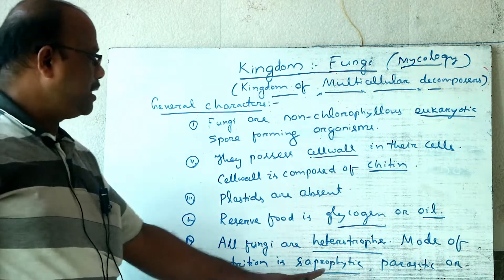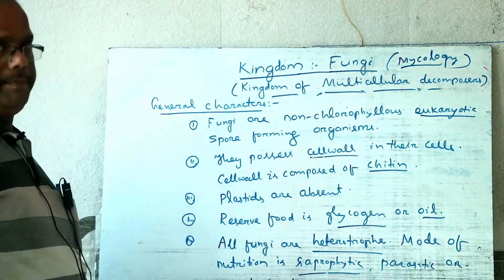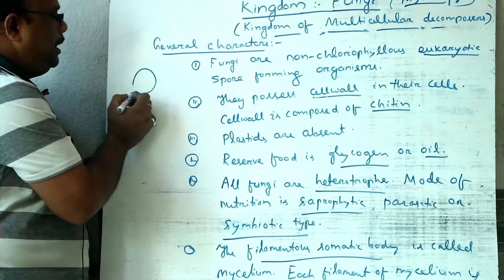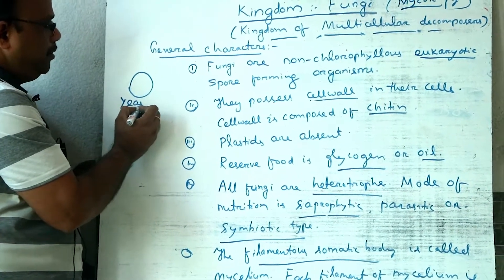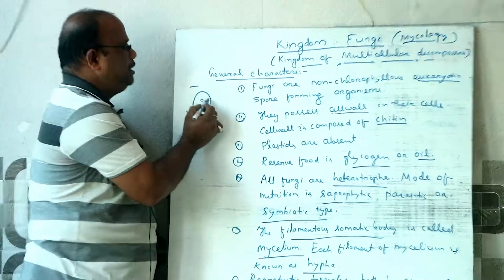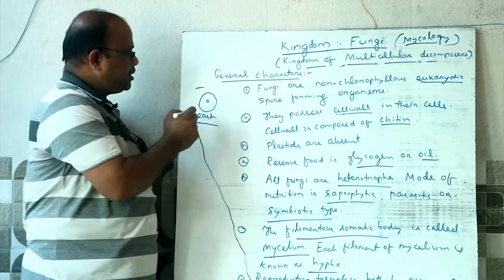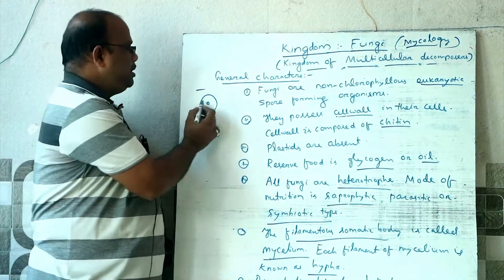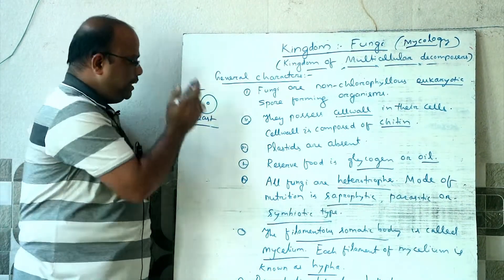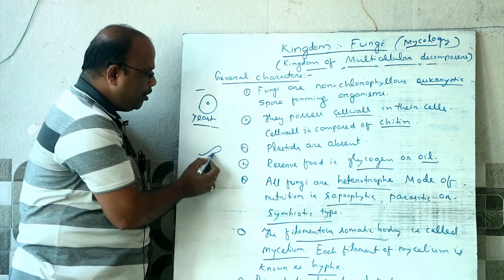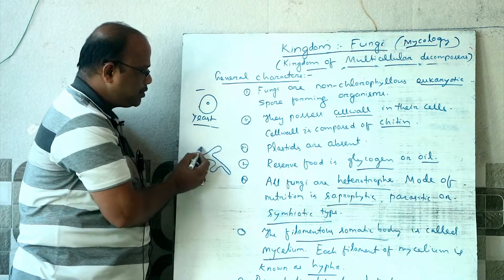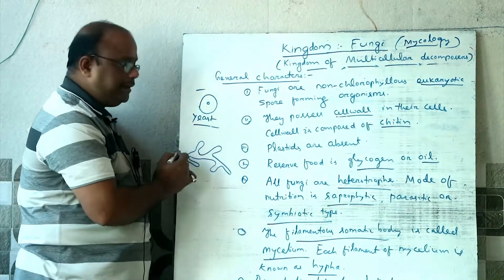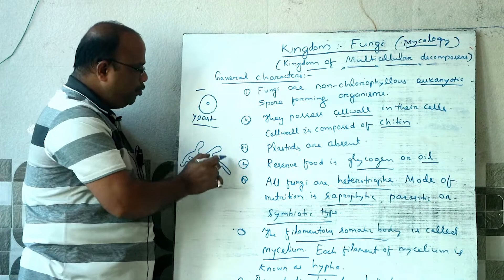So fungi nutrition can be saprophytic, parasitic, or symbiotic. Yeast and Saccharomyces are unicellular fungi, commonly called baking fungi. Except for yeast, the body of all fungi is filamentous, meaning a thread-like body.